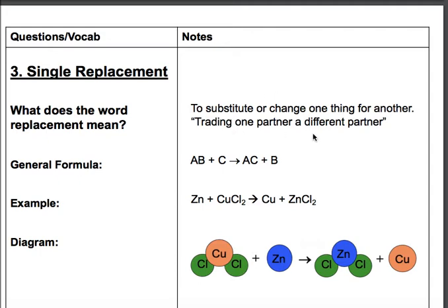The general formula for single replacement is AB plus C yields AC plus B. So you'll notice that the B and the C here actually switched places. So the C goes where the B was, and the B goes where the C was at the end.